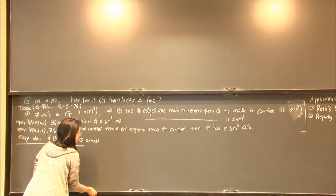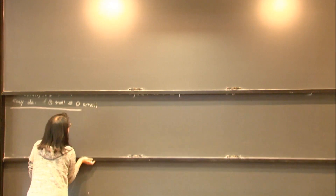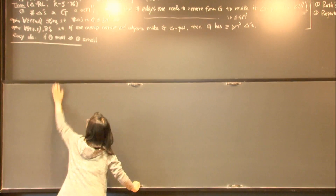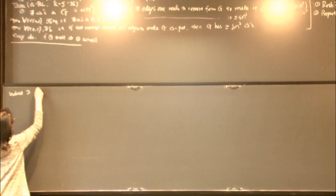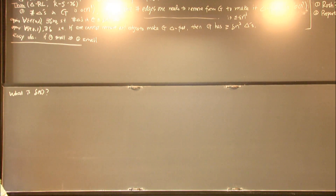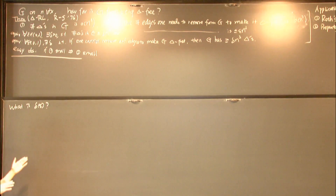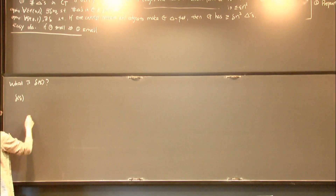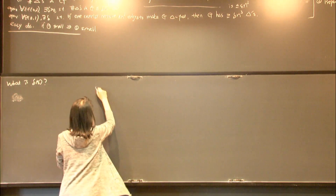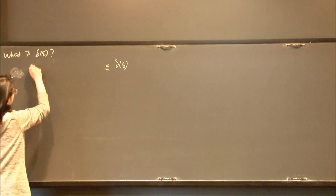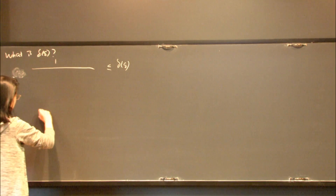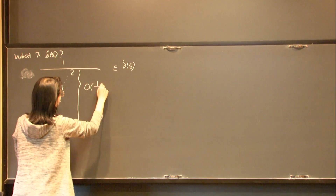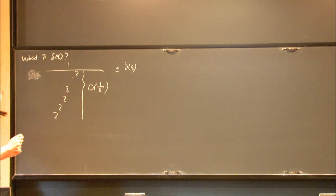So what are the actual bounds in the triangle removal lemma? The first lower bound on delta looks very strange. From the proof we get that delta(epsilon) is at least 1 over a tower of twos: two to the two to the two to the two... — a tower of twos whose height is a polynomial in 1/epsilon.